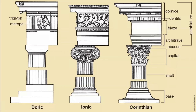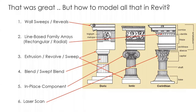Essentially it boils down to these three main orders — the Doric, Ionic, and Corinthian — which are very well known to architects around the world. Each column is made up of a base, a shaft, a capital, and the abacus which holds the architrave. The architrave is the linear element that's part of the building. Then we have the frieze, the dental moldings, and the cornices. All of these — the cornices, the dentals, the frieze, and the architrave — make up the entablature, with different variations depending on whether it's Greek or Roman.